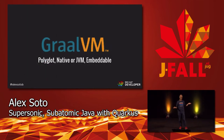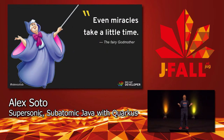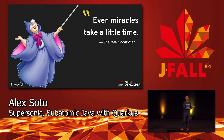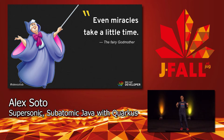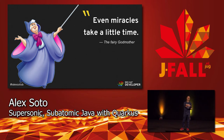This is thanks to GraalVM, which compiles your Java application into a native executable. However, it takes around one minute and a half to two minutes to compile to native, depending on the machine. This is something you need to take into consideration when moving to native executables.